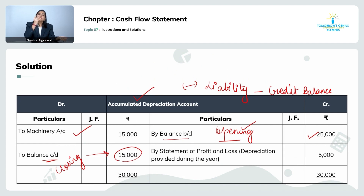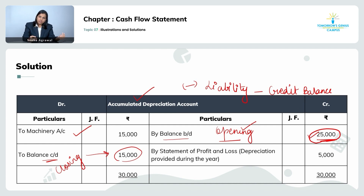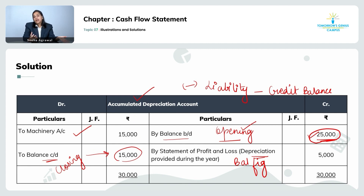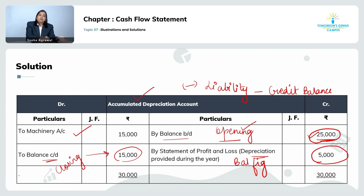I will pass an entry in the accumulated depreciation account to remove the depreciation part. To reduce accumulated depreciation, you debit it. The entry is: accumulated depreciation account debit to machinery account for 15,000. Now balancing the accumulated depreciation account gives a balancing figure on the credit side, which represents the depreciation charged for the current year. Depreciation is a non-cash expense and is added back in the operating activity.